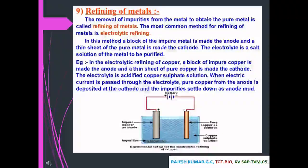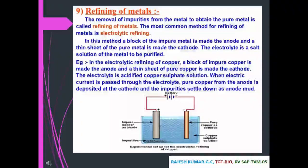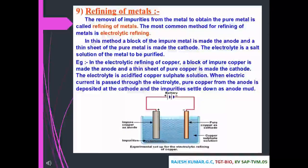Refining of metals: the removal of impurities from a metal to obtain the pure metal is called refining. The most common method is electrolytic refining. In this method, a block of the impure metal is made the anode and a thin sheet of pure metal is made the cathode. The electrolyte is an aqueous solution of the metal to be purified. For example, electrolytic refining of copper.